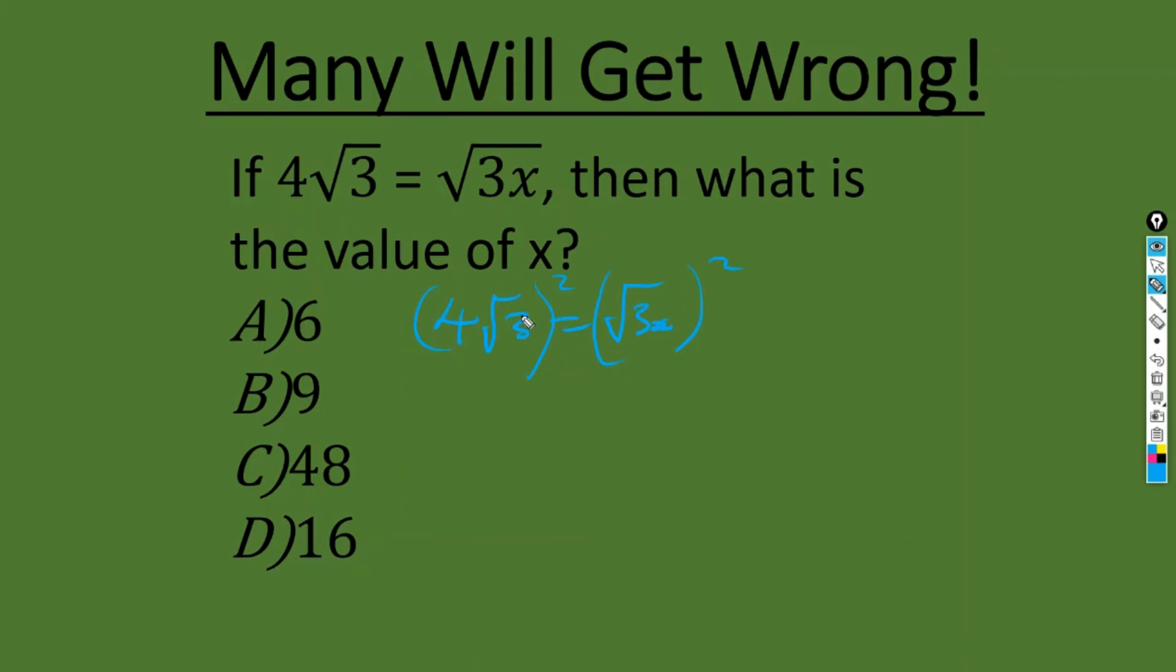Remember in your radicals, the square of this, that is 4 times 4 root 3. So that's 4 times 4, which is 16. The square root of 3 and the square root of 3, when you multiply, the square cancels and it's 3.